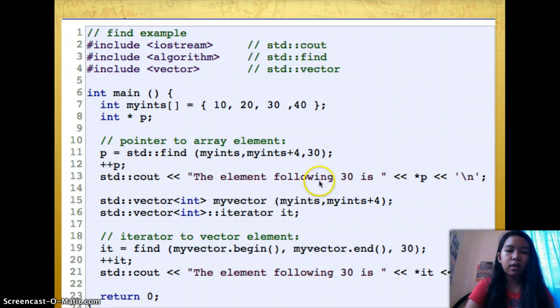std::cout the element following 30 is *p. std::vector<int> myvector myints and myints plus 4.